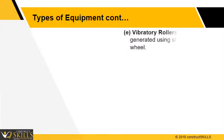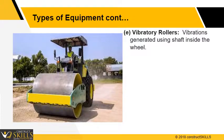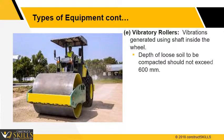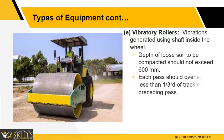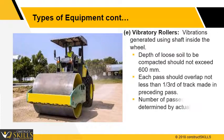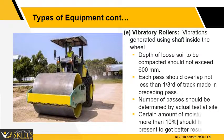Vibratory roller: vibrations are generated using the shaft inside the wheel. Depth of loose soil to be compacted should not exceed 600 mm. Each pass should overlap not less than one third of the track made in the preceding pass. Number of passes should be determined by actual test at site. A certain amount of moisture, not more than 10%, should be present to get better results.